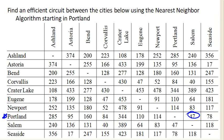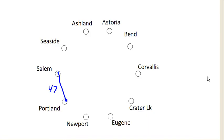So now we are in Salem. From Salem, where should we go? My nearest neighbor to Salem is Corvallis, which is 40 miles away. So from Salem, we're going to go to Corvallis, which is 40 miles. Notice that my graph here has absolutely no relation to the physical locations of these cities — I just listed them all in a big circle so that I could easily draw the graph.